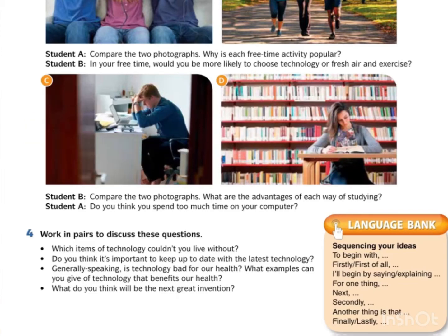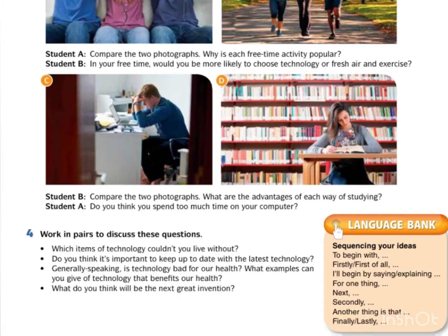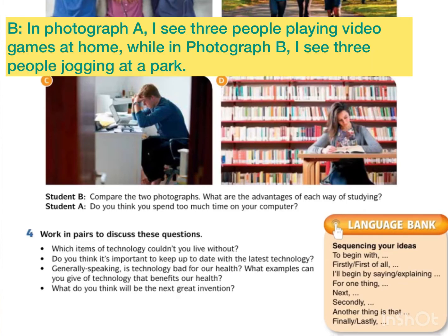So your conversation can look like this. Student A asks the first question: 'Compare the two photographs — why is each free time activity popular?' Student B, nyatakan dulu apa yang nampak dalam kedua-dua gambar. 'In photograph A, I see three people playing video games at home. While in photograph B, I see three people jogging at the park.' Kemudian, B nyatakan persamaan kedua-dua gambar.